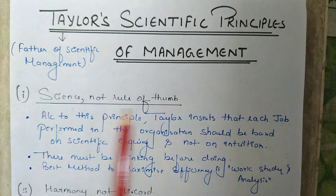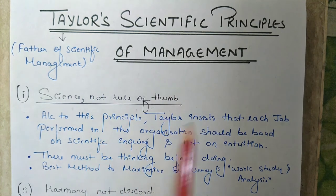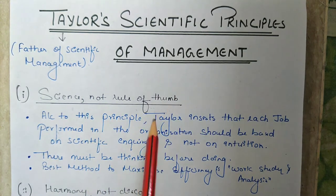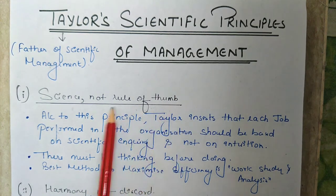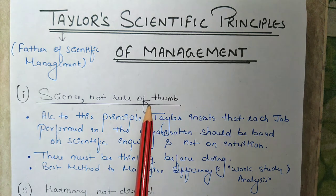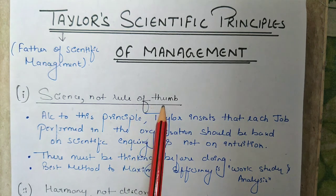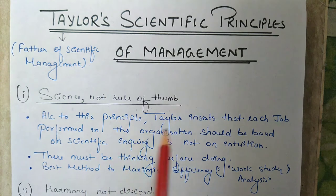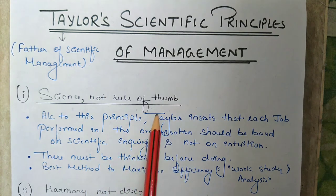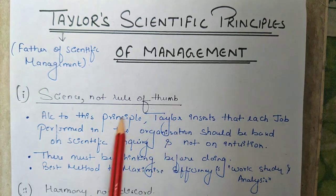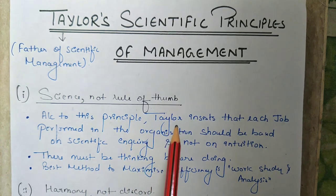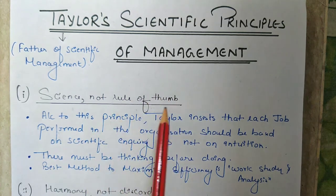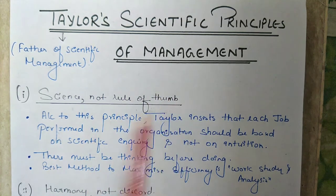Now what does rule of thumb here mean? Management is also a science but it is not rule of thumb, which means it is not as rigid as scientific principles. Scientific principles are rigid but management principles change according to the time. So the management principle is not rule of thumb.